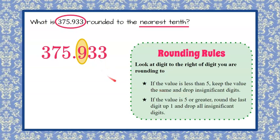Well, our value in the hundredths digit, which is one to the right, is less than 5. So we know that we're going to use this rule.